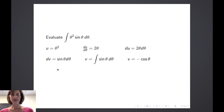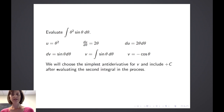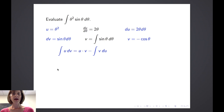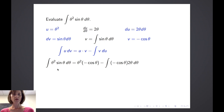Notice I didn't add a plus c here — when using integration by parts, that constant would end up canceling out, so we wait until after evaluating the second integral. We choose the simplest antiderivative for v. Plugging into u times v minus the integral of v du, we get: the integral of theta squared times sine of theta d theta equals theta squared times negative cosine of theta, minus the integral of negative cosine of theta times 2 theta d theta.